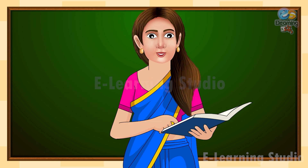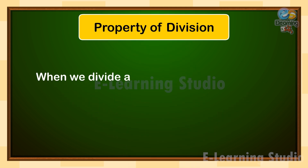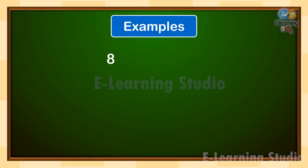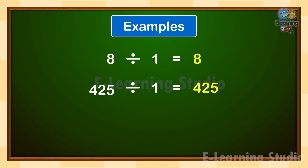Let us know about the first property. When we divide a number by 1, the quotient is the number itself. Let us understand with the help of some examples. 8 divide by 1 is equal to 8. 425 divide by 1 is equal to 425. 372 divide by 1 is equal to 372.